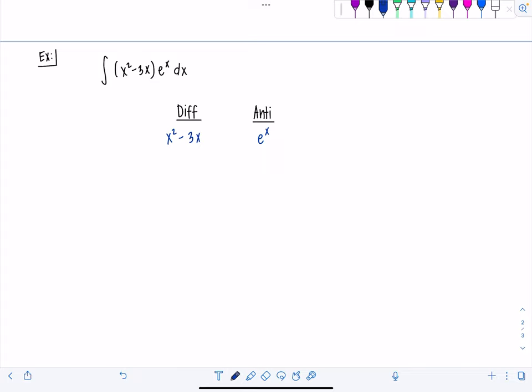All right, did you pause it? I hope you tried it on your own. So derivative of x squared minus 3x, that's 2x minus 3. Again, derivative of 2x minus 3 is 2. And then derivative again, 0. So I'm done. Now I'm going to anti-differentiate e to the x. It's my favorite function to integrate. Look at that. Beautiful. Now draw your arrows.